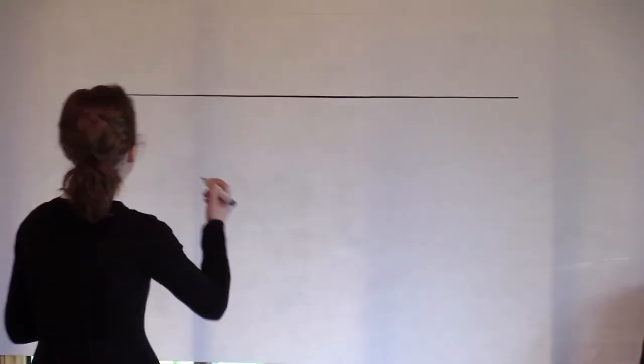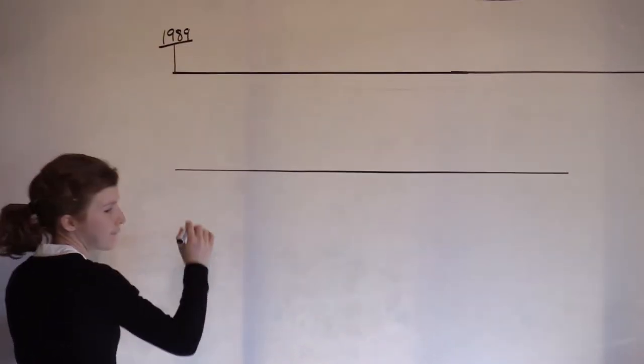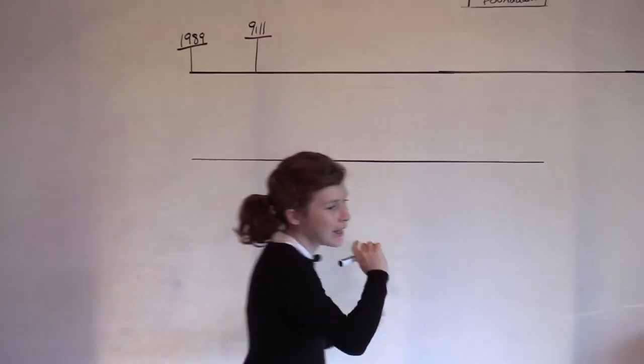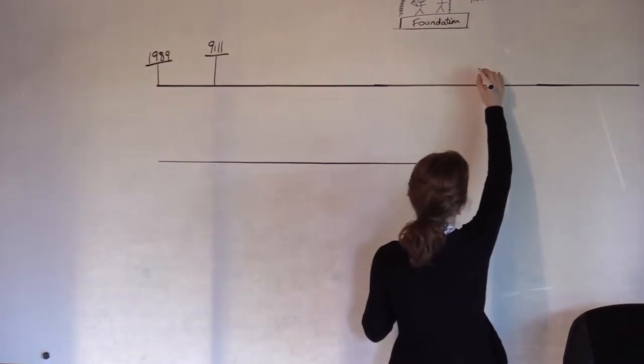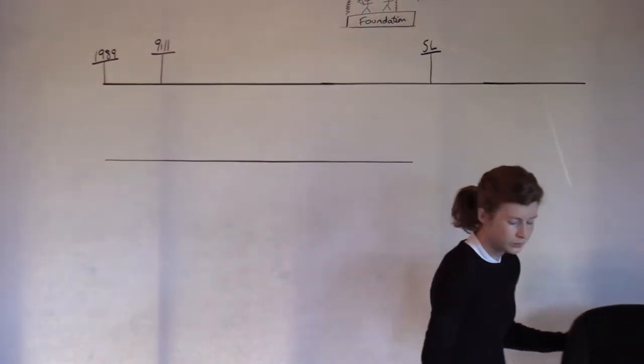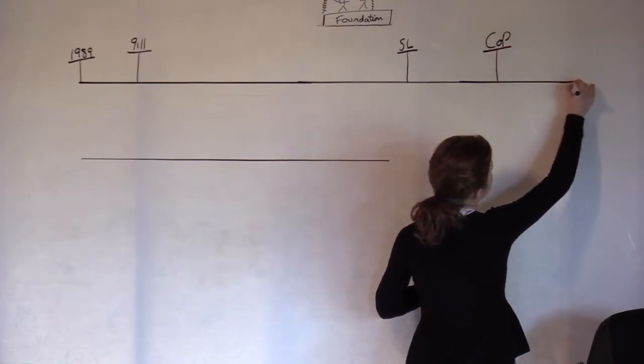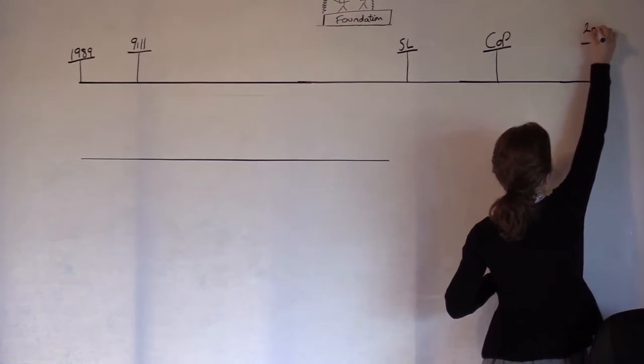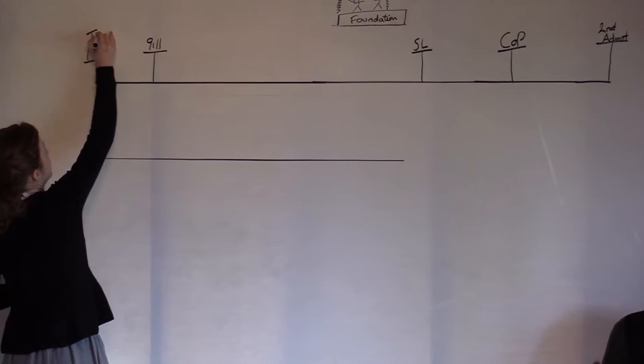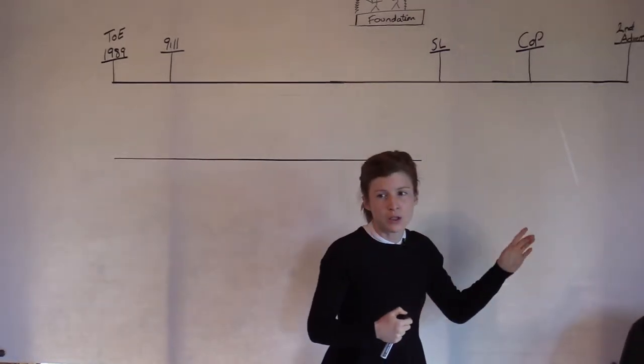If we consider the line of the 144,000, it begins at the time of the end in 1989. Then we mark 9-11, our next waymark Sunday Law, Close of Probation and Second Advent. From 1989, the time of the end and 9-11, the two new waymarks that we've studied out in this movement, but then the ones we know from the Great Controversy of Sunday Law, Close of Probation and Second Advent.